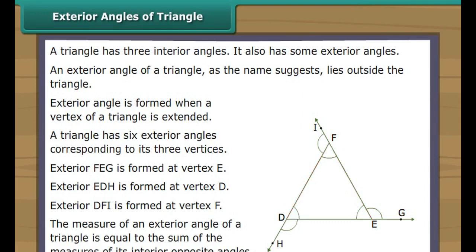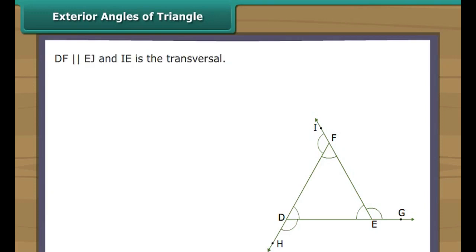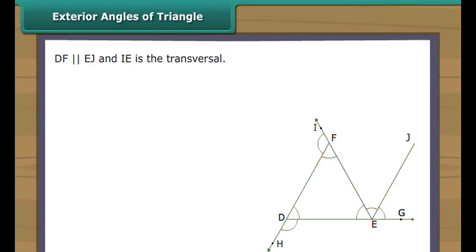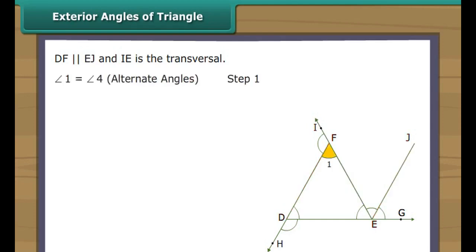Let us now prove the same. We draw a line segment EJ from point E such that EJ is parallel to DF. If we regard IE as a transversal intersecting the parallel lines DF and EJ, angle 1 is equal to angle 4 — alternate angles.